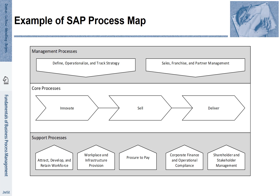That core process is composed of three sequential steps: innovate, sell and deliver enterprise software. There are several support processes: attracting, developing and retaining workforce; providing workplace and infrastructure; procurement; corporate, financial and operational compliance; and shareholder and stakeholder management. There are two major management processes: define, operate and track strategy; and sales, franchise and partner management.